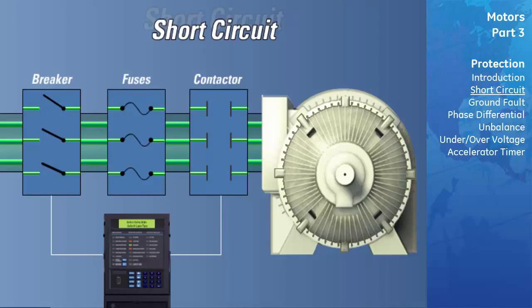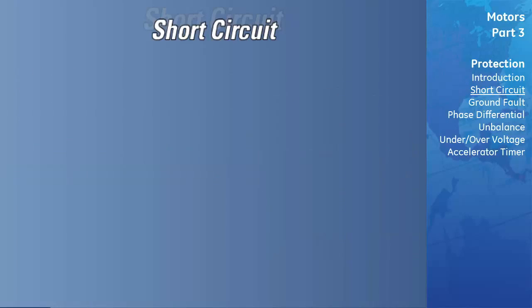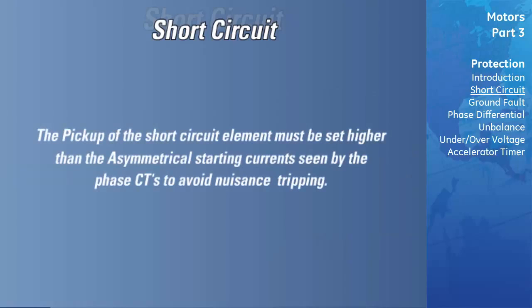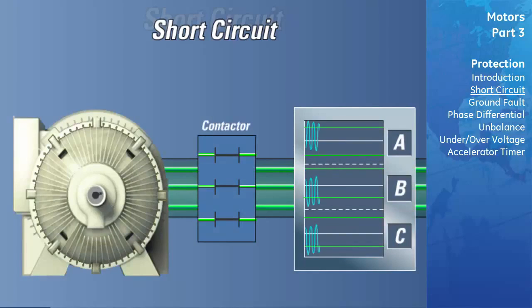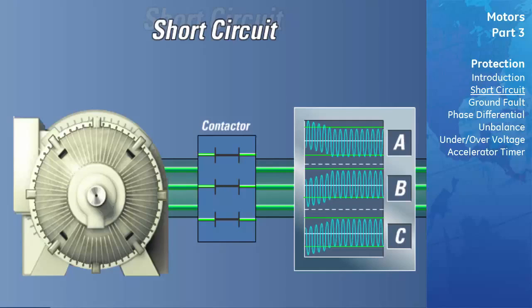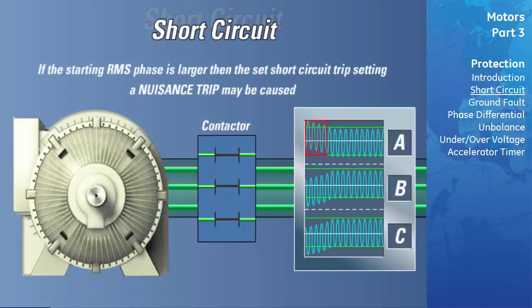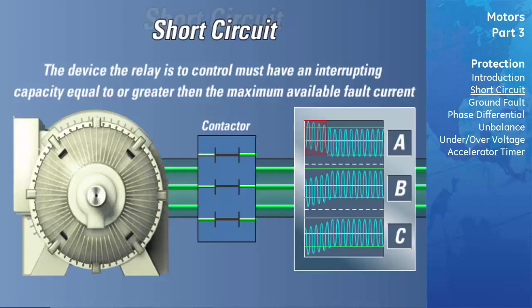When a motor starts, the starting current, which is typically six times the full-load current rating, has asymmetrical components. These asymmetrical currents may cause one phase to see as much as 1.7 times the normal RMS starting current. As a result, the pickup of the short-circuit element must be set higher than the maximum asymmetrical starting currents to avoid nuisance tripping. The rule of thumb is to set the short-circuit protection pickup to at least 1.7 times the maximum expected symmetrical starting current of the motor. It is important to note that the device the relay controls must have an interrupting capacity equal to or greater than the maximum available fault current.